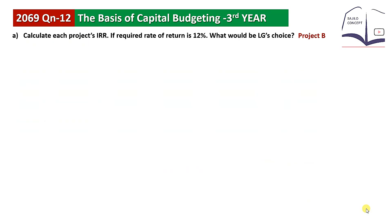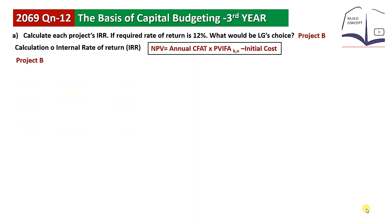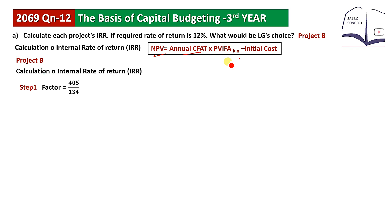For Project B, which has even cash flow, we use the formula: annual cash flow multiplied by PVIFA (required rate, years) minus initial cost. Step 1 is to find the factor, which is 3.0883.